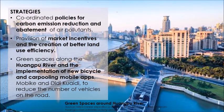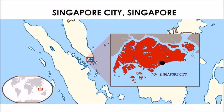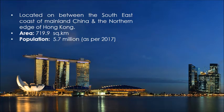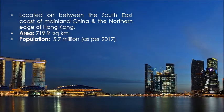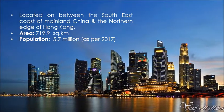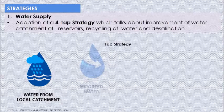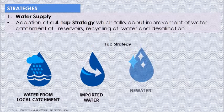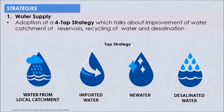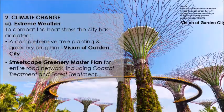Singapore is located between the southeast coast of mainland China and the northern edge of Hong Kong, with a population of about 5.7 million and an area of about 720 square kilometers. The main challenges were water supply, climate change, and transportation. For water supply, Singapore adopted a 4-tap strategy covering improvement of water catchment of reservoirs, recycling of water, and desalination.